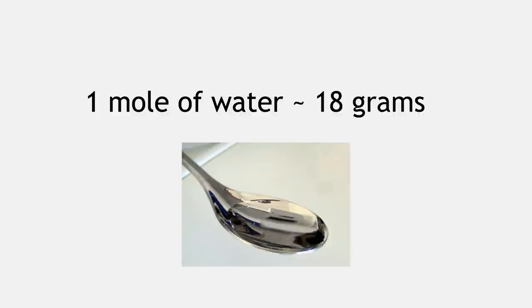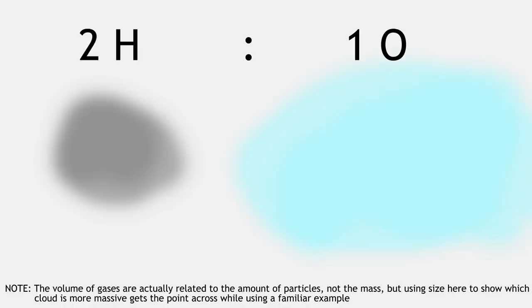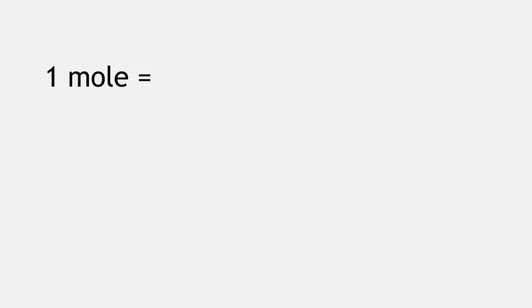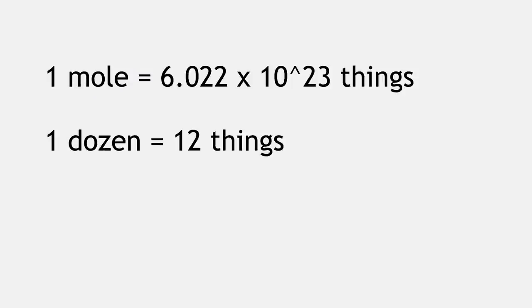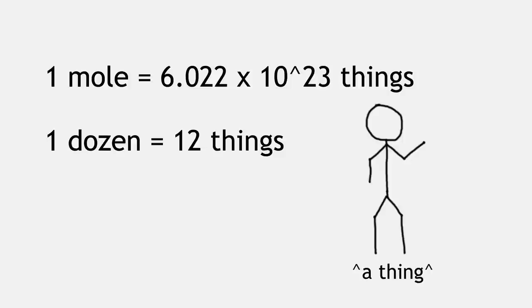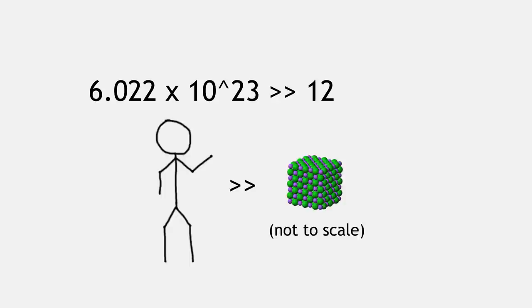One mole is equivalent to 6.022 times 10 to the 23rd particles. For reference, one mole of water has a mass of about 18 grams, or about a tablespoon. The mole lets us use these handy ratios at the macroscopic scale. So now we can say that to make one mole of water, you'd need a 2-to-1 ratio of hydrogen and oxygen atoms, which would be about 2 grams of hydrogen and 16 grams of oxygen, because oxygen atoms weigh a lot more than hydrogen atoms. So that's how you're supposed to use the mole. But how are we going to use it? Since the mole is a unit quantified by a number — in the same way that a dozen is 12 — we can use the mole to quantify people. The only problem is that a mole is a lot bigger than a dozen, and people are a lot bigger than salt molecules.